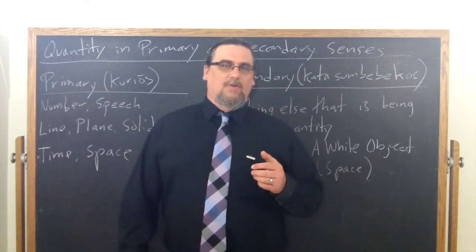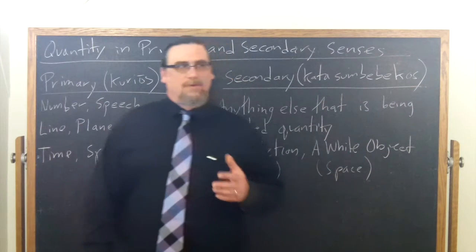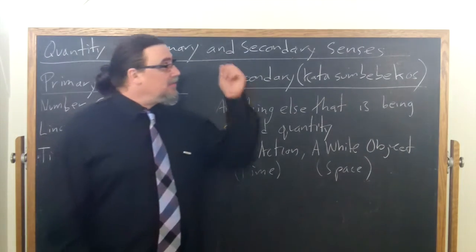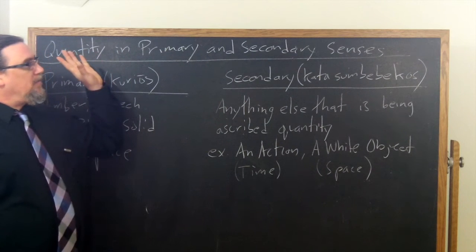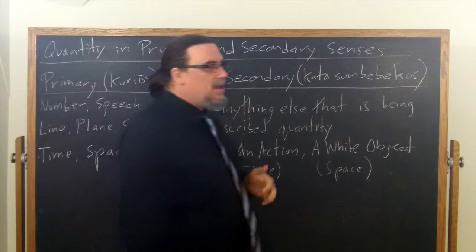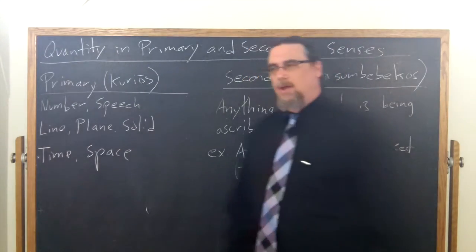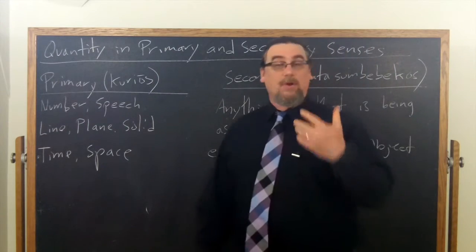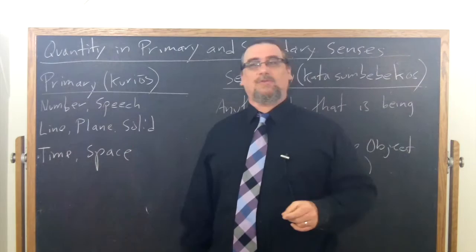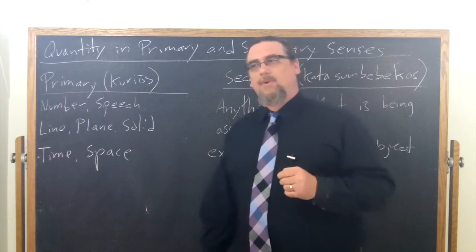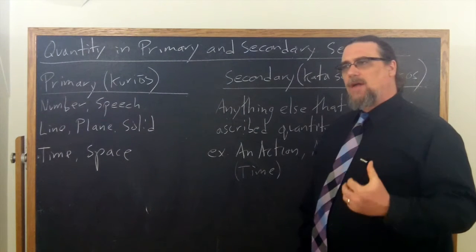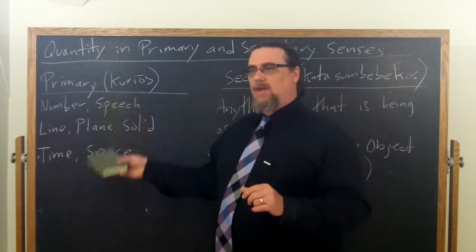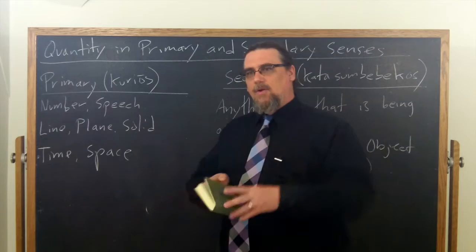One particularly interesting, and I think for a lot of first-time readers, confusing distinction that Aristotle will make in Categories Chapter 6, where he's discussing quantity, is that between what we translate as primary and secondary senses of this category of quantity. How is it that things are of a certain amount or measure out to a certain number? So Aristotle is going to, at this point, say something that we have to sort of look back and then bring these ideas in in order to make sense of.